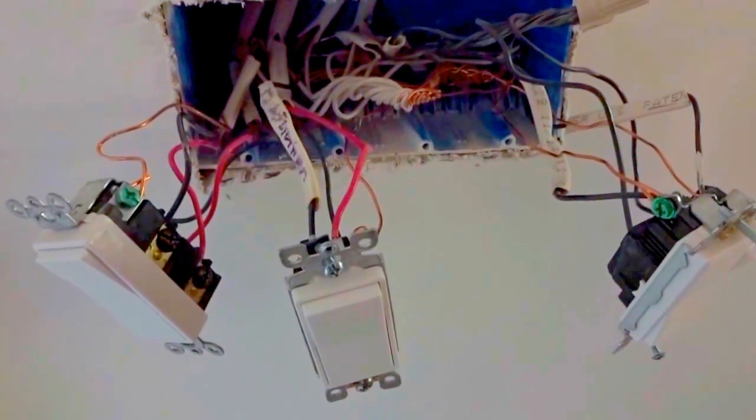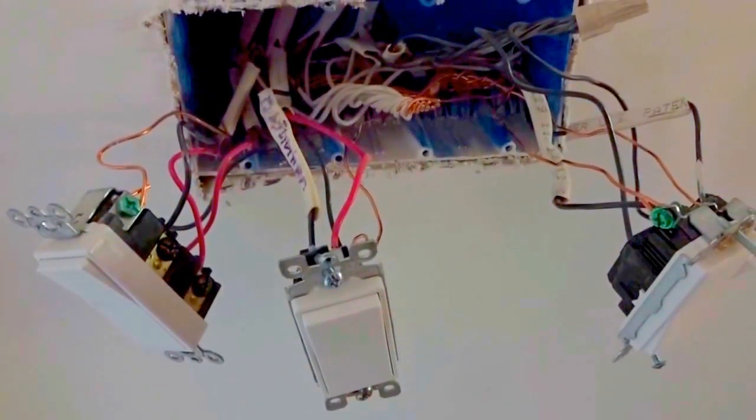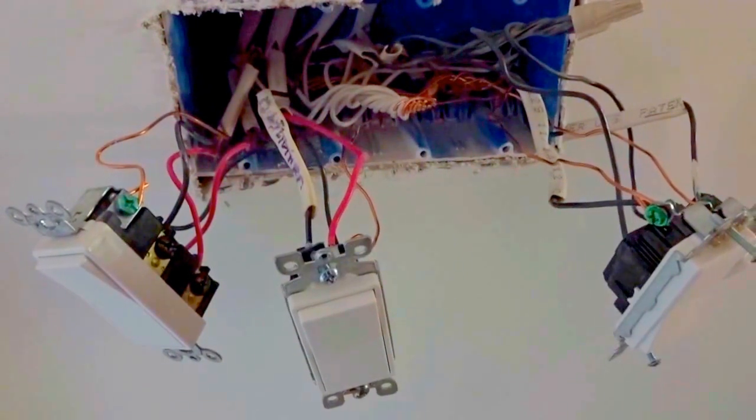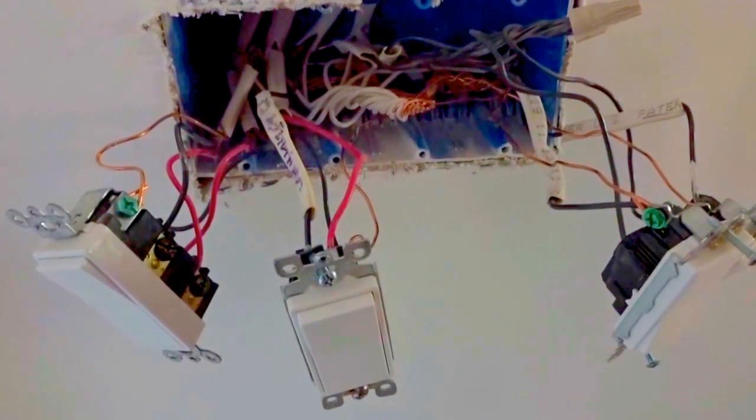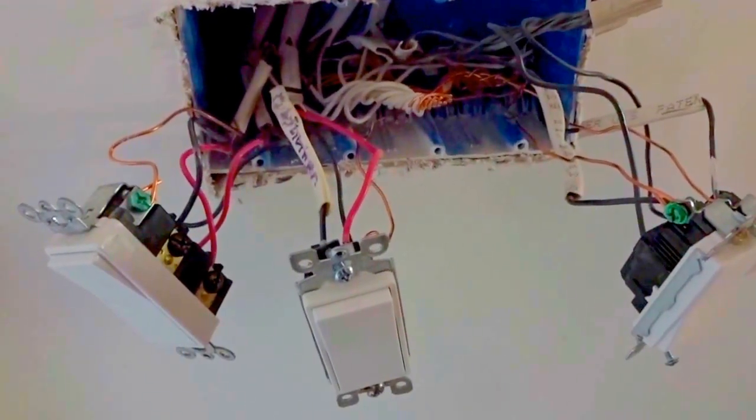But since building inspectors don't use magnetic field meters and mostly just check by seeing if the lights come on or off, these things go unnoticed. We find them in one out of four homes.